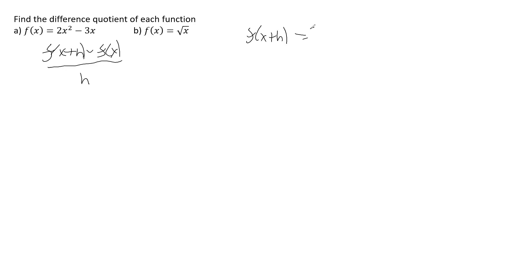that's going to be 2 times x plus h squared minus 3 times x plus h. x plus h squared, you would have to write that as x plus h times x plus h and then foil it and then distribute the 2.